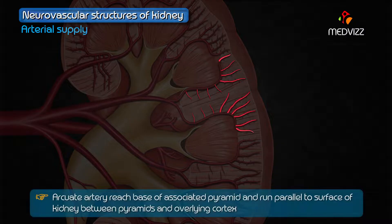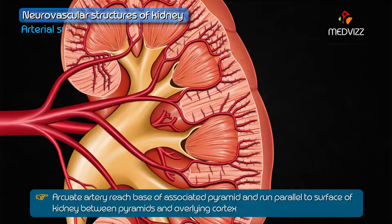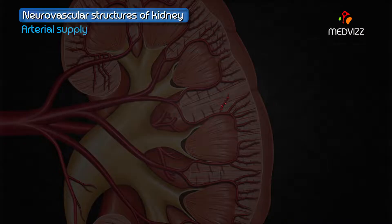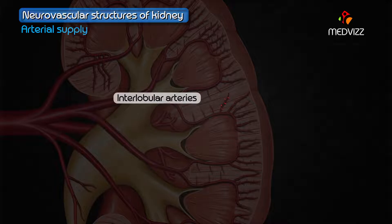Each interlobar artery divides into arcuate arteries as they reach the base of the associated pyramid. These arcuate arteries run parallel to the surface of the kidney, between the pyramids and the overlying cortex. Each arcuate artery gives off many interlobular arteries, which pass radially towards the surface of the kidney.